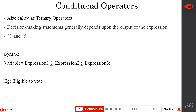In expression one, we generally give a condition. For example, I have taken the 'eligible to vote' example. If the age of a person is greater than 18, then the person is eligible to vote — this is a familiar condition we already know.